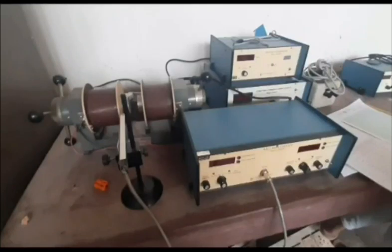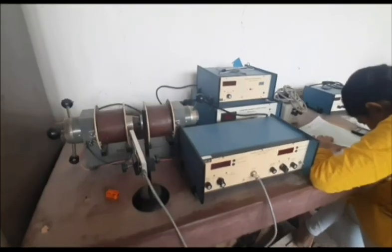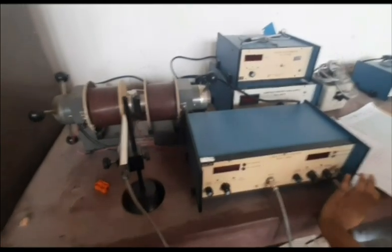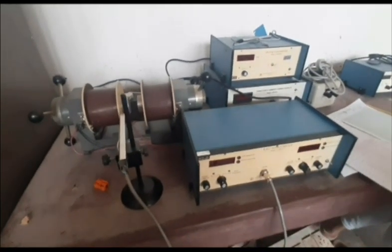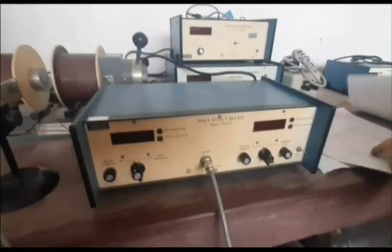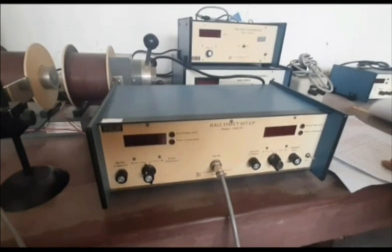Hi everyone, you can see this is the experiment to study the magneto resistance of a germanium n-type sample. The aim of the experiment is to study the variation of magneto resistance of the sample with applied magnetic field and to measure the magneto resistance of the given semiconductor sample. The apparatus required for this experiment are: